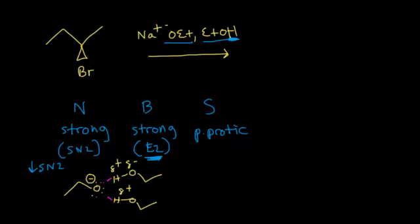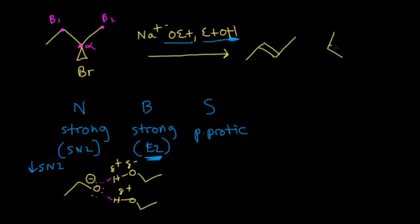Now that we know it's E2, we identify the alpha carbon and the adjacent beta carbons — beta 1 and beta 2. The base can take a proton from either beta position. From the beta 1 position, we form an alkene between the alpha and beta carbon. We can get a trans alkene and a cis alkene; trans is the major product because trans is more stable than cis.